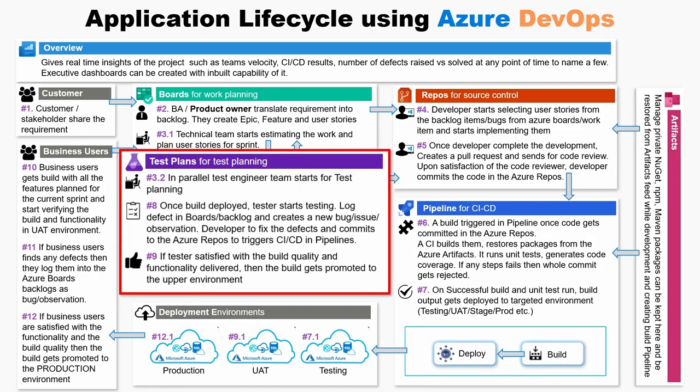Once the build is deployed in the testing environment, the testing team starts testing by executing test plans manually or automatically. Defects get logged in Azure Boards by creating a new bug, issue, or observation. Developers pick up and fix these defects and commit to Azure Repos to trigger the CI/CD pipeline.